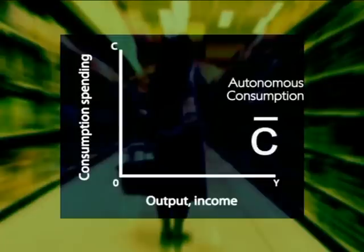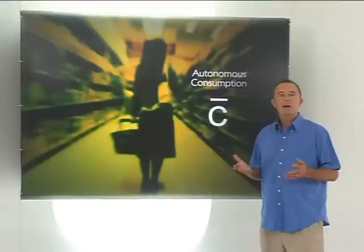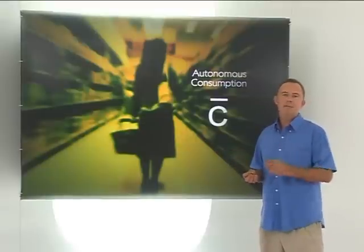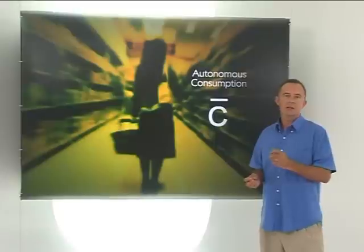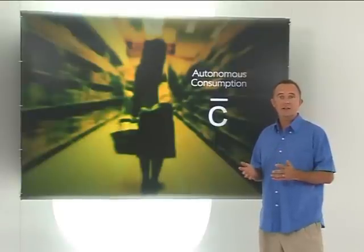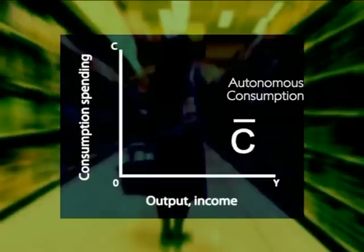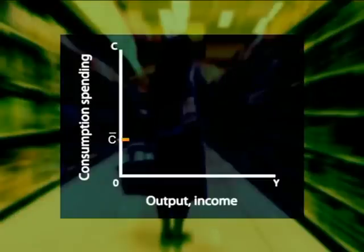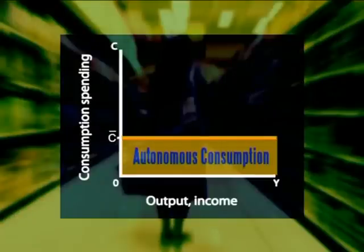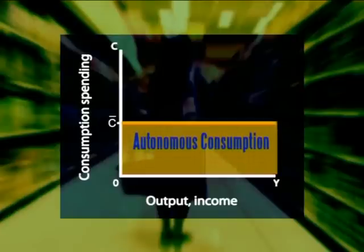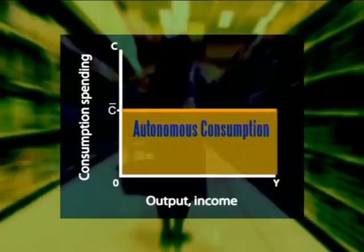Autonomous consumption, c bar, is that part of consumption spending that is independent of the level of income. We've seen that even if income's zero, some consumption spending still takes place. And this is why, in this graph, autonomous consumption spending starts at a point on the vertical axis above zero. A change in autonomous consumption spending changes this vertical intercept.